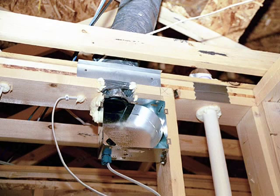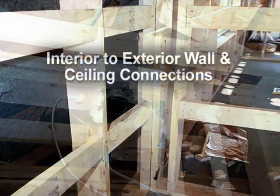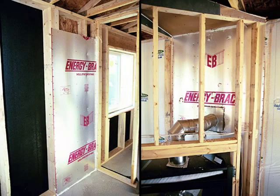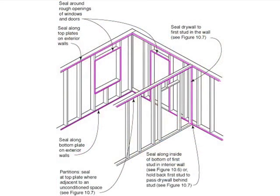All holes in the exterior wall assembly and holes between floors need to be sealed as well. Interior wall-to-exterior wall connections also present a challenge to maintaining the continuity of the insulation as well as the airflow retarder. Drywall should be sealed around rough openings of windows and doors, at top and bottom plates of exterior walls, and where interior walls meet exterior walls.